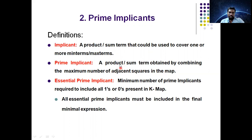What this definition is saying: after simplification of the K-map, you will get one output expression. In the final expression, each and every term present in that expression is called a prime implicant. So technically, a prime implicant is a product term or sum term obtained by combining the maximum number of adjacent squares in the K-map.